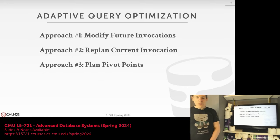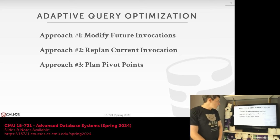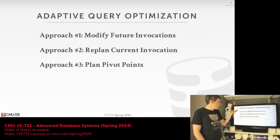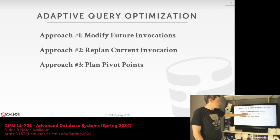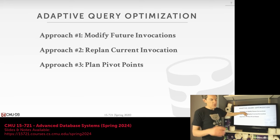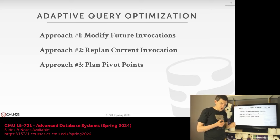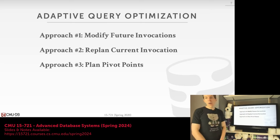There are three broad categories for using adaptive query optimization. One is using AQO to benefit future invocations of our query. The second approach is to improve our current invocation. The third is also about helping the current query, but this would involve starting over from scratch and running through the optimizer all over again, versus adding locations in the query plan that allow you to switch one strategy to another without having to go back to the optimizer.